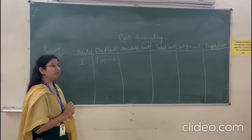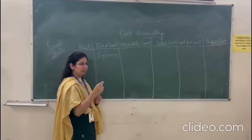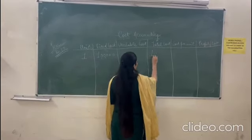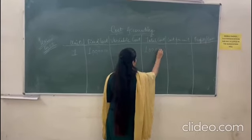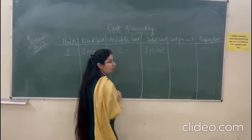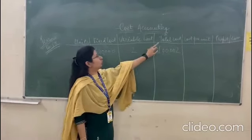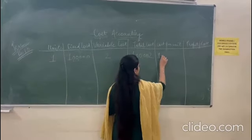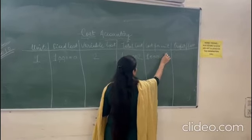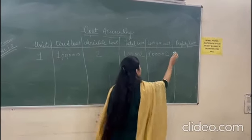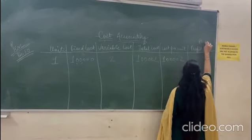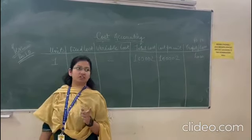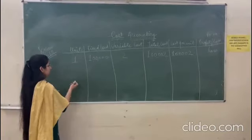Then suppose my variable cost for making the pen, the plastic, the ink, the nib, everything will be for two rupees. So my total cost becomes one lakh two rupees. Now per unit cost. How will you find per unit cost? Total cost divided by number of units. So your selling cost that you have decided is rupees 10. So you are definitely in loss if you are manufacturing one unit.